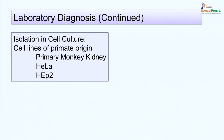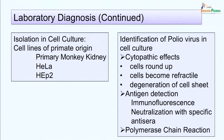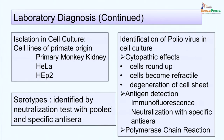The virus can be isolated in cell lines of primate origin only. Commonly used cell cultures are primary monkey kidney cells, HeLa, and HEp-2 cells. Virus growth is identified by typical cytopathic effects: cells round up, become more refractile, and there is degeneration of the entire cell sheet. Antigen detection can also be done by immunofluorescence or neutralization with specific antisera. Virus growth can additionally be detected by PCR. Serotypes can be identified by neutralization test with pooled as well as specific antisera.